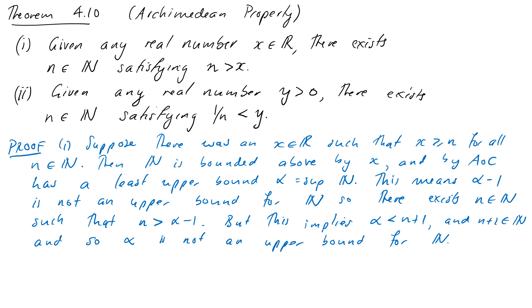The slightly convoluted setup with α − 1 was designed so it would produce n + 1, because we know the successor of a natural number is also a natural number. So n + 1 is guaranteed to be bigger than α, contradicting α being an upper bound — which means our theorem is true.